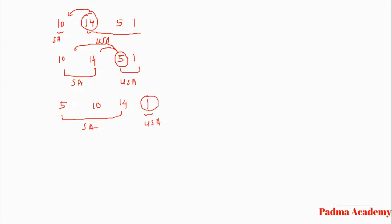Then we compare 1 with every element in the sorted array. Is 1 less than 14? Yes. Is 1 less than 10? Yes. Is 1 less than 5? Yes. Then we replace 1 at the position of 5 and shift 5, 10, and 14 one position ahead. The array becomes 1, 5, 10, and 14.